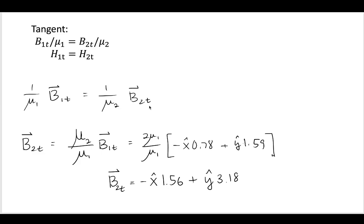Now the B2 tangent is a little bit trickier than the normal components. And that's because, right, the tangent part here is when we have to start taking into account our material properties. So setting these two components equal, I can rearrange to solve for the B2 tangent vector. So that must be the mu2 divided by mu1.